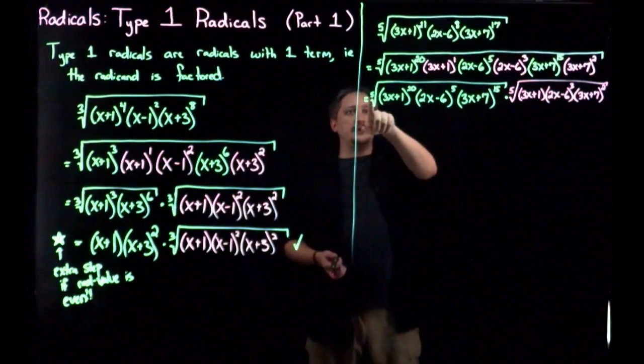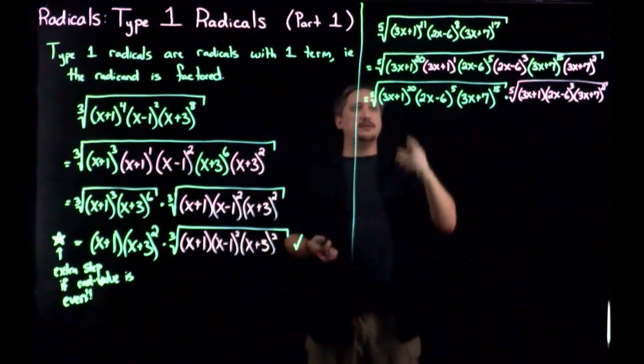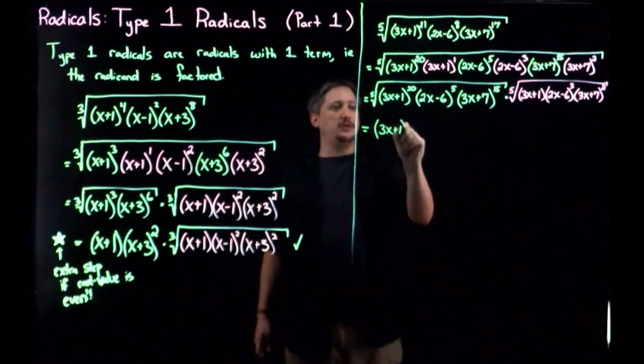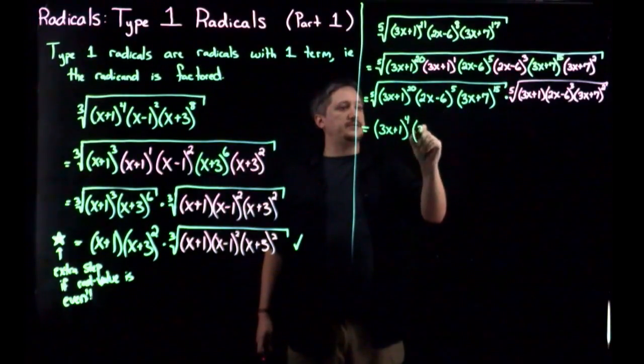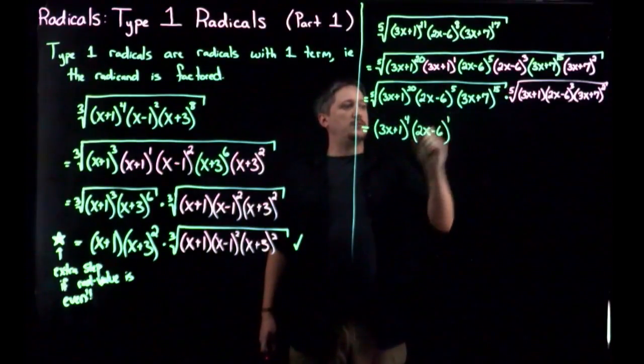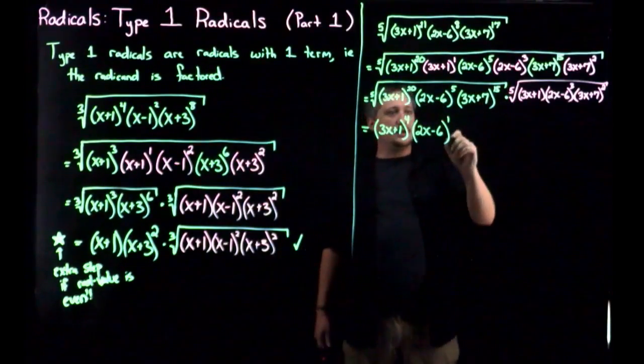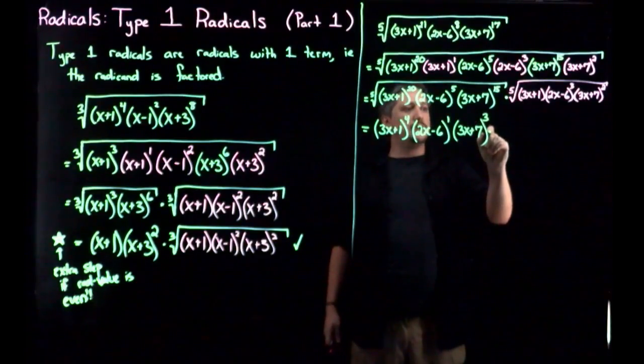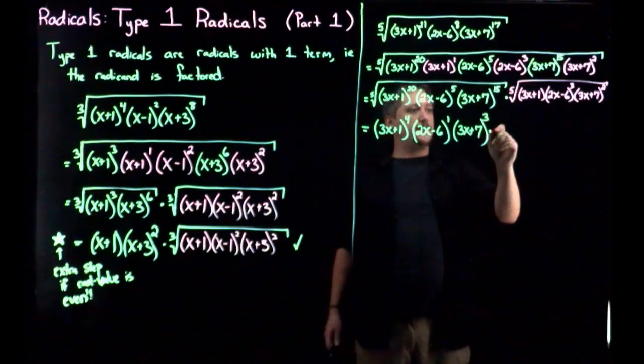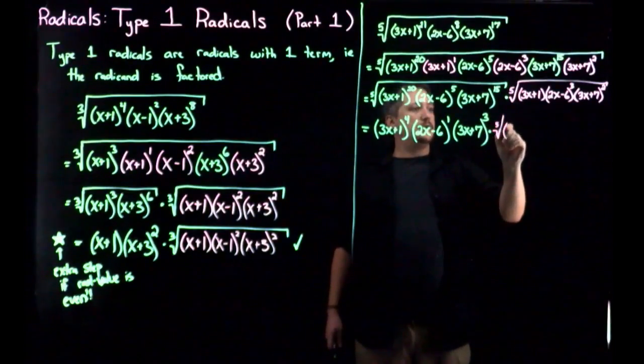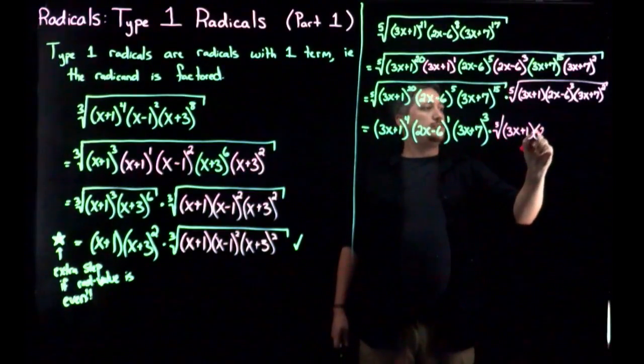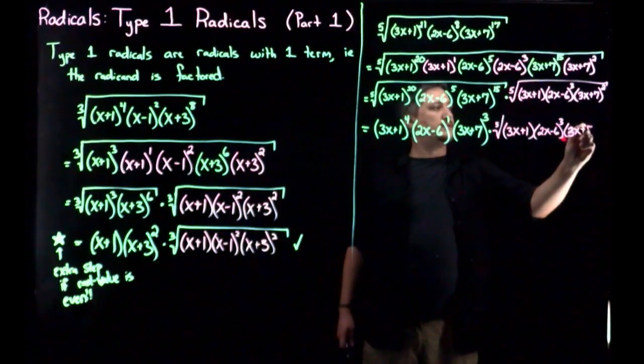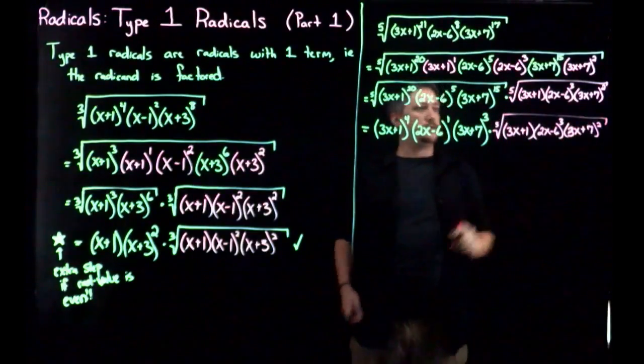And here I can now simplify out the fifth root. So I want to divide. I'm going to have 20 divided by 5, so that's 4. So I'm going to have 3x plus 1 to the 4th, 2x minus 6. So 5 and 5, that'll give me a 1. And 3x plus 7, 15 over 5, so that'll be a 3, times. And then all of that stays the same. So fifth root, 3x plus 1, 2x minus 6 cubed, 3x plus 7 squared, and root. So that's it.